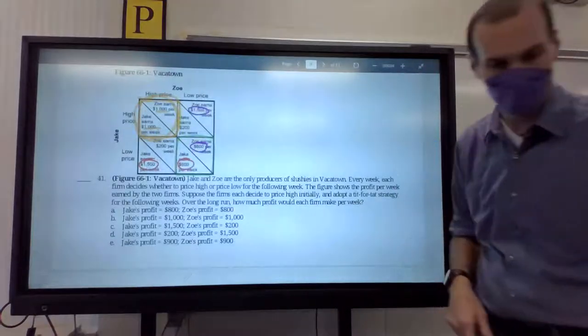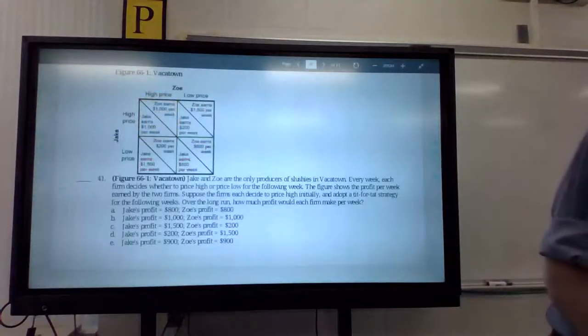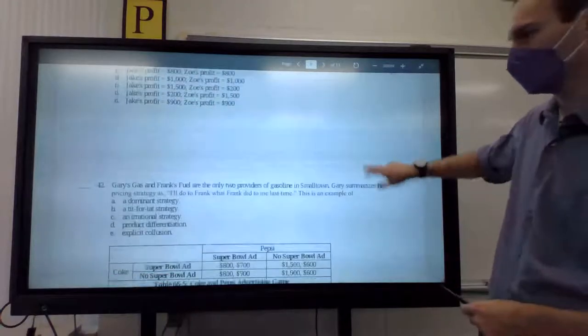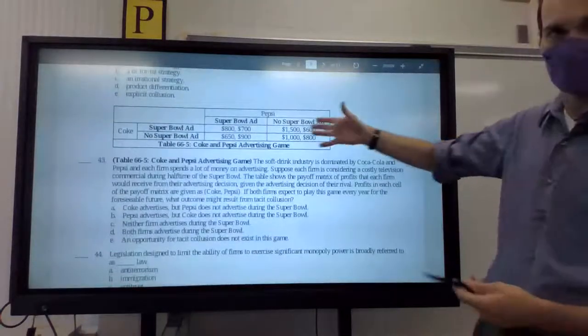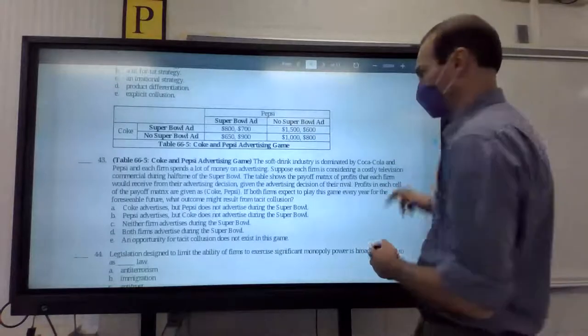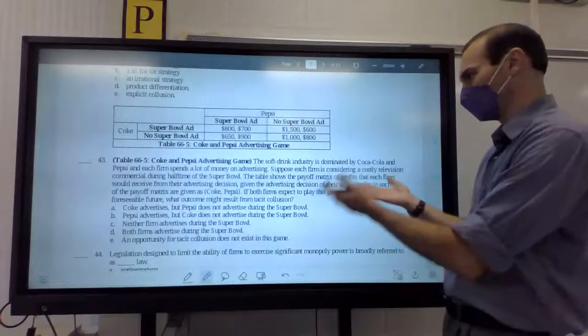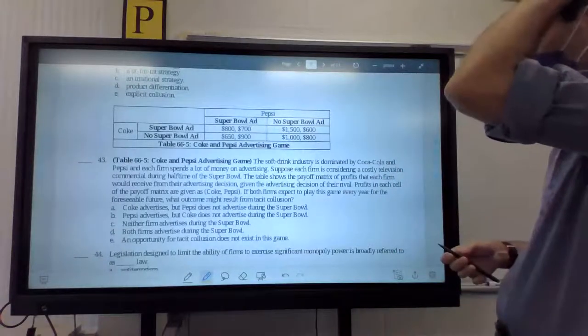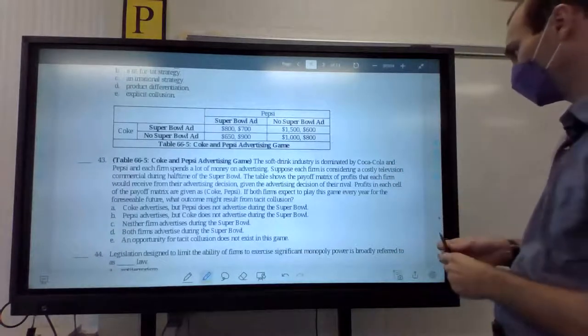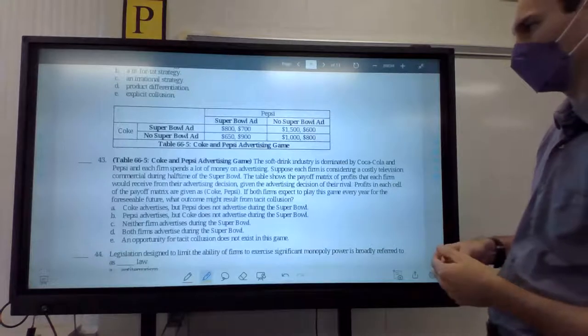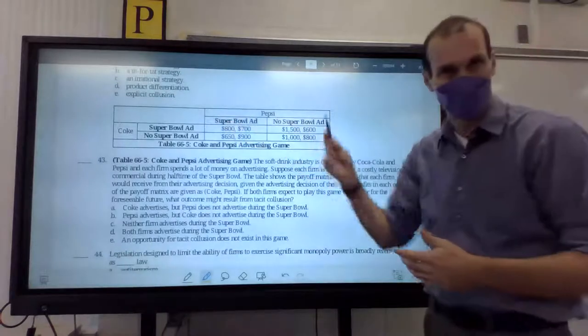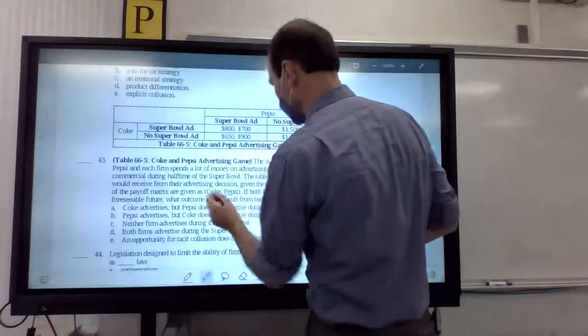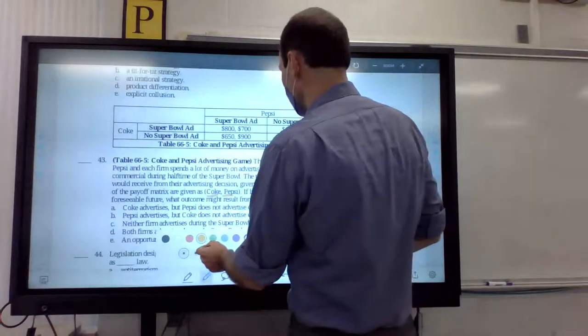All right. And the last one. Oh, last two. Sorry. 43. All right. Another kind of side-by-side. So, let's go ahead and solve it. They're trying to add to a super bowl. Should they advertise or not? They show the payoff matrix. The profits to each shown in the payoff matrix are Coke-Pepsi. Yep. Coke-Pepsi. They tell you. So, it's Coke-Pepsi. All right. And we'll do Pepsi first.